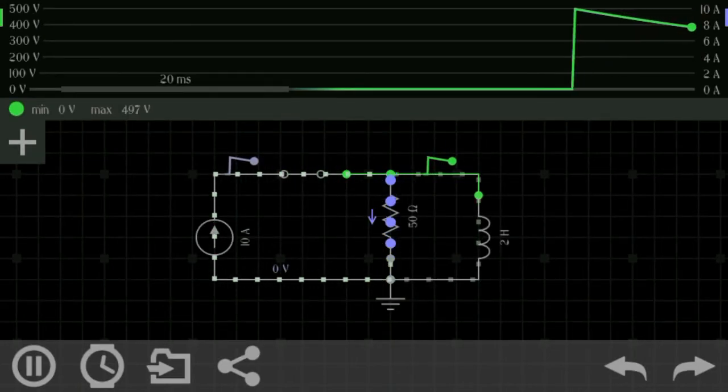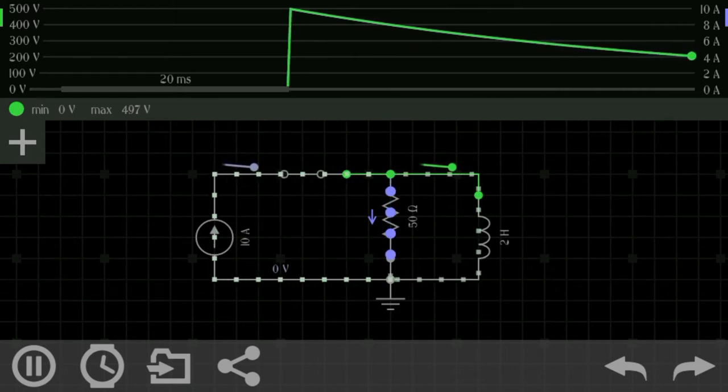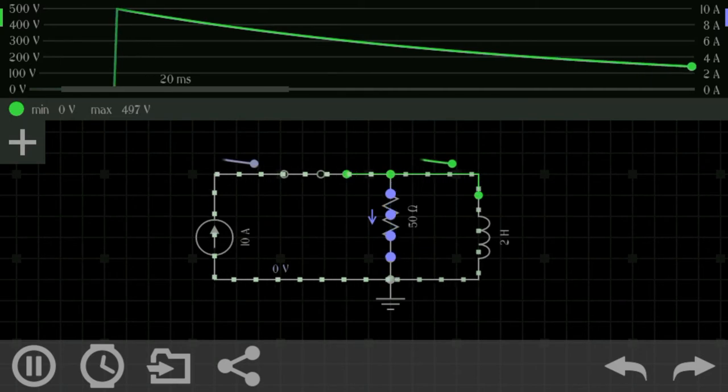As we close the switch, the voltage and current decrease on the oscilloscope. So in conclusion, as time increases, the current flow decreases.